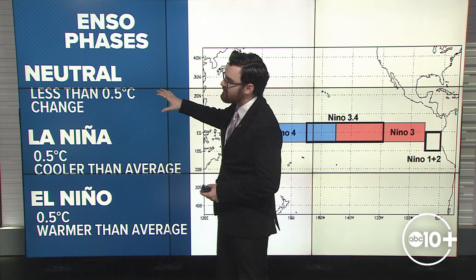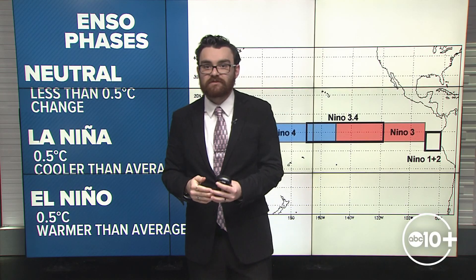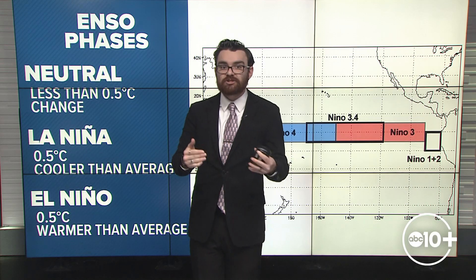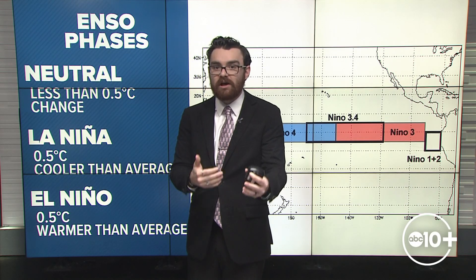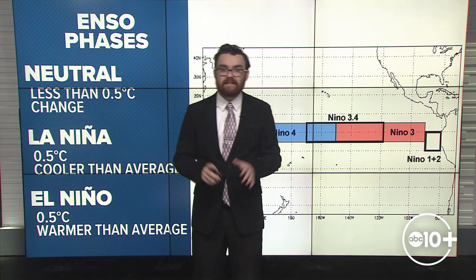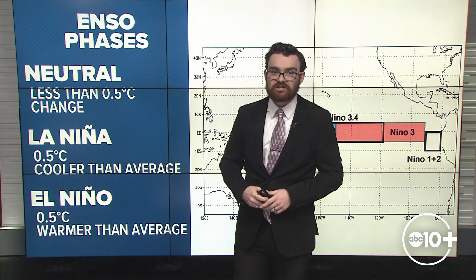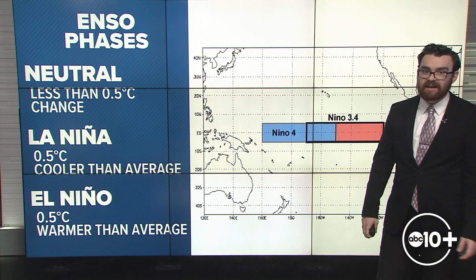Neutral phase means there's less than 0.5 degrees Celsius change in the average sea surface temperature — it's about average. La Niña means it's cooler than average: about half a degree Celsius or more below the average sea surface temperature, all in this Nino 3.4 region. And then the opposite of La Niña is El Niño, meaning it's half a degree Celsius or warmer than the average sea surface temperature in that area.